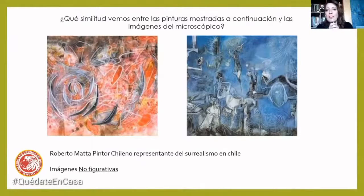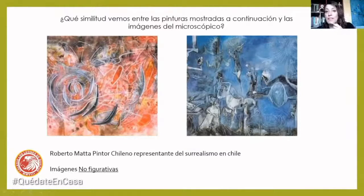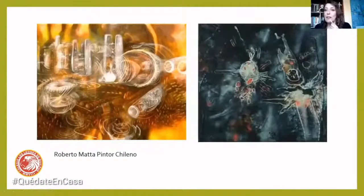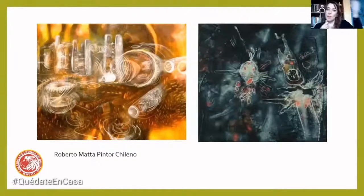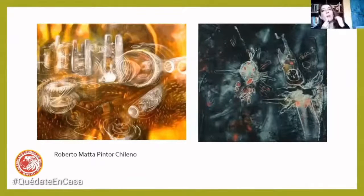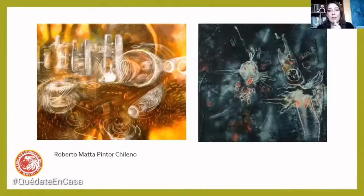Si nosotros tuviésemos que decir qué cosas parecidas tienen las imágenes del microscopio y esta que estamos viendo: tienen las texturas, tienen los colores parecidos, tienen muchas formas que son orgánicas, como que fuesen sacadas también de un microscopio. Son como mundos chiquititos, mundos micros. Alguien me podría decir también que parecen mundos macros, que parece el espacio o las galaxias, pero en este caso lo estamos enfocando más a lo chiquitito. Estas imágenes de este pintor chileno, Roberto Matta, tienen alguna similitud con las imágenes que vimos del microscopio.